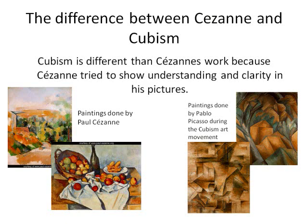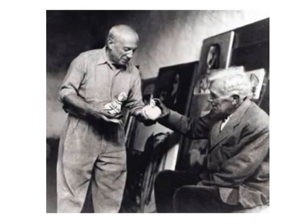On the left, you can see examples of paintings done by Paul Cézanne, and on the right, you can see two paintings done by Pablo Picasso during the Cubism art movement.